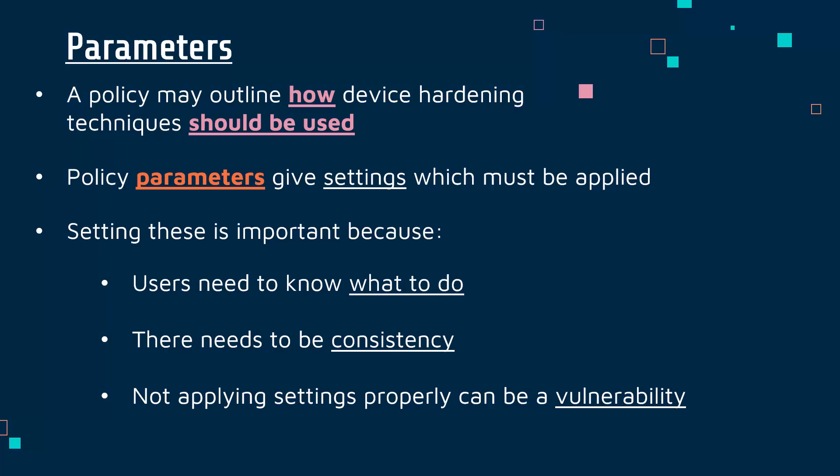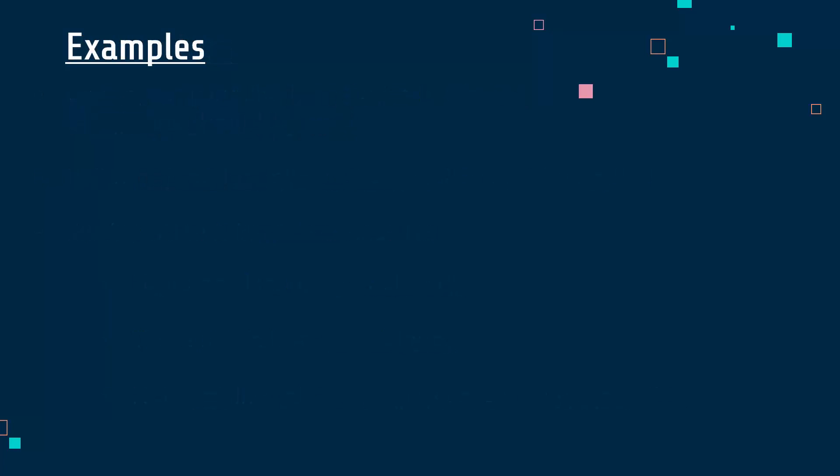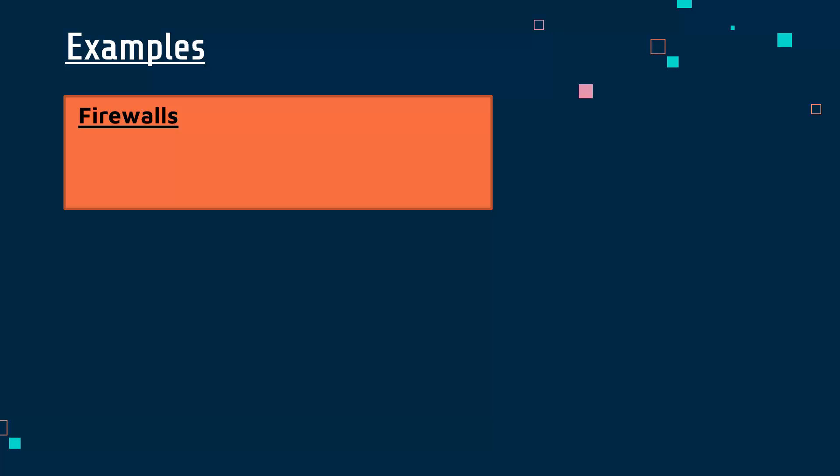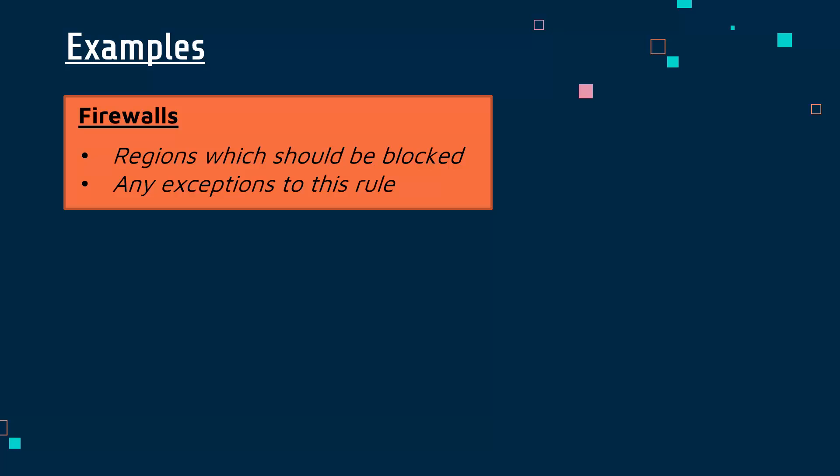As an IT manager you should outline exactly how you expect different techniques to be used, including the different settings and parameters. For example, if you choose a firewall as one of your techniques, you might have a policy covering how to install and use it, but also set specific parameters — such as which regions of the world should be blocked, certain countries, continents, or groups of websites viewed as potential threats. You might also outline any exceptions to the rules specified in the policy, along with all the specific settings for the more technical details.